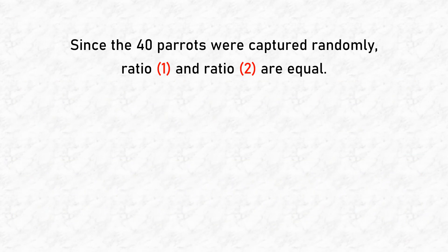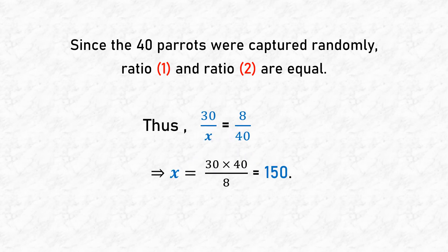Since the 40 parrots were captured randomly, Ratio 1 and Ratio 2 are equal. Thus, 30 by X equals 8 by 40. On cross multiplying, we get X equals 30 into 40 divided by 8, that is 150.